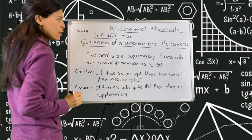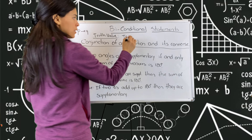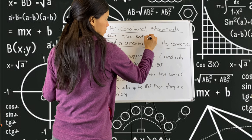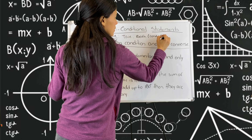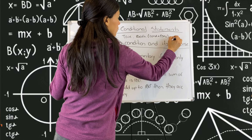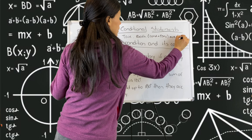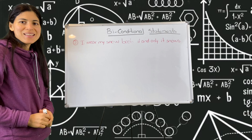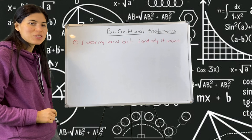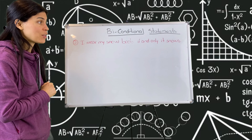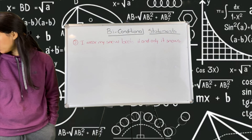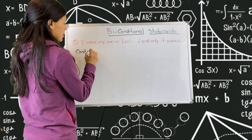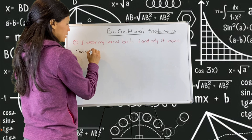It is true when both the conditional and the converse are true — that's how we know when a biconditional statement is true. Is the condition true? Yes, the condition is true. Is the converse true? If two angles add up to 180, then they are supplementary — it is true. Therefore, the truth value is true, because both the conditional and converse are true.